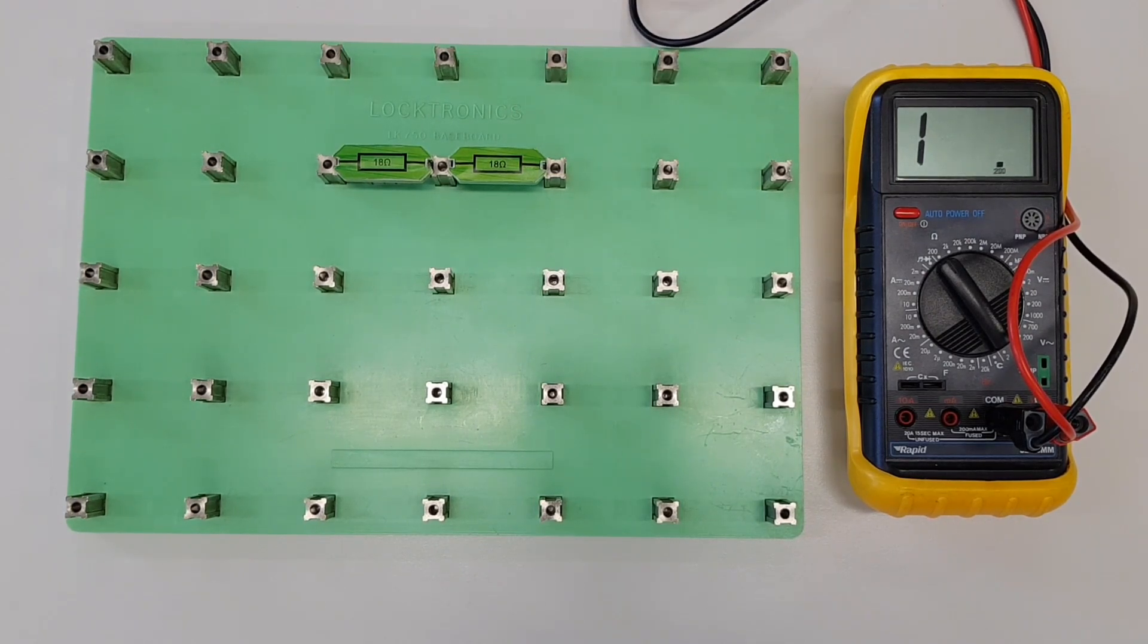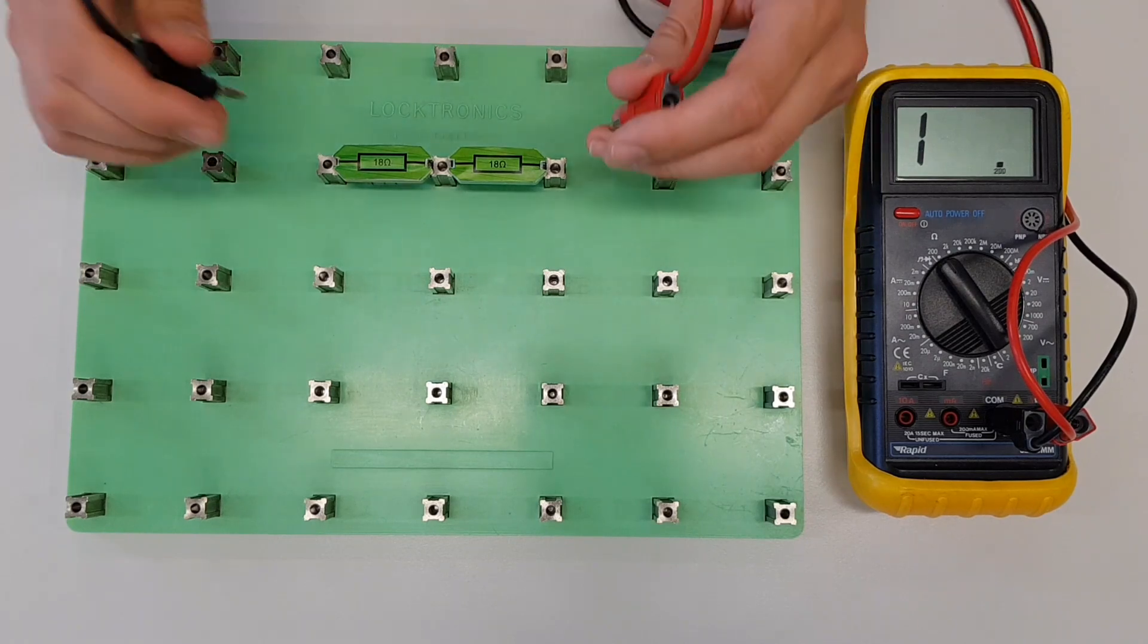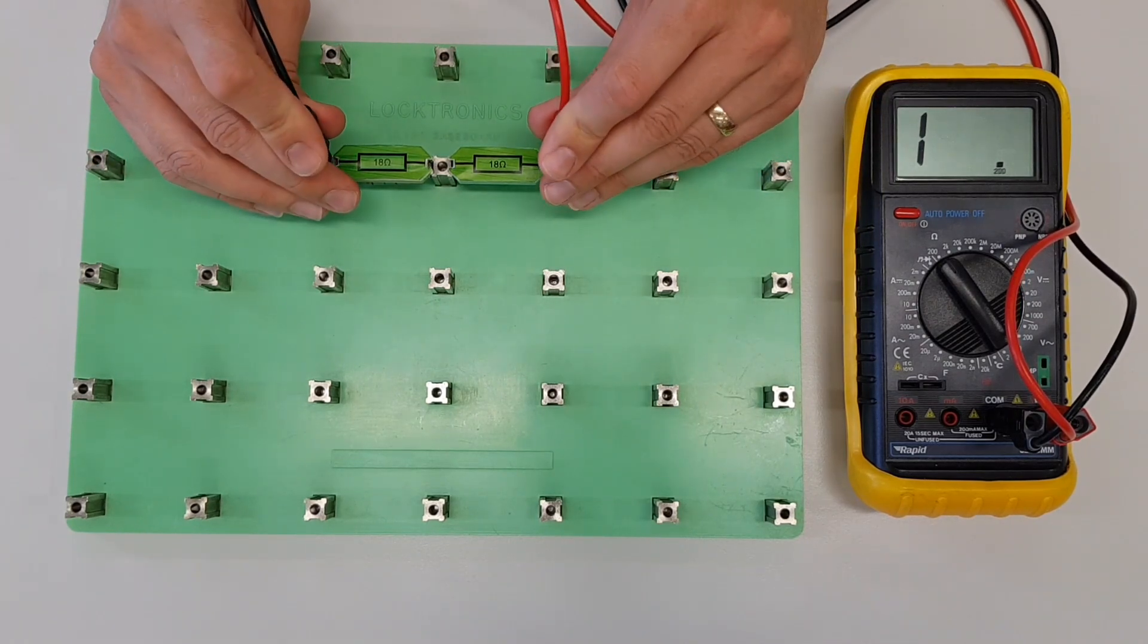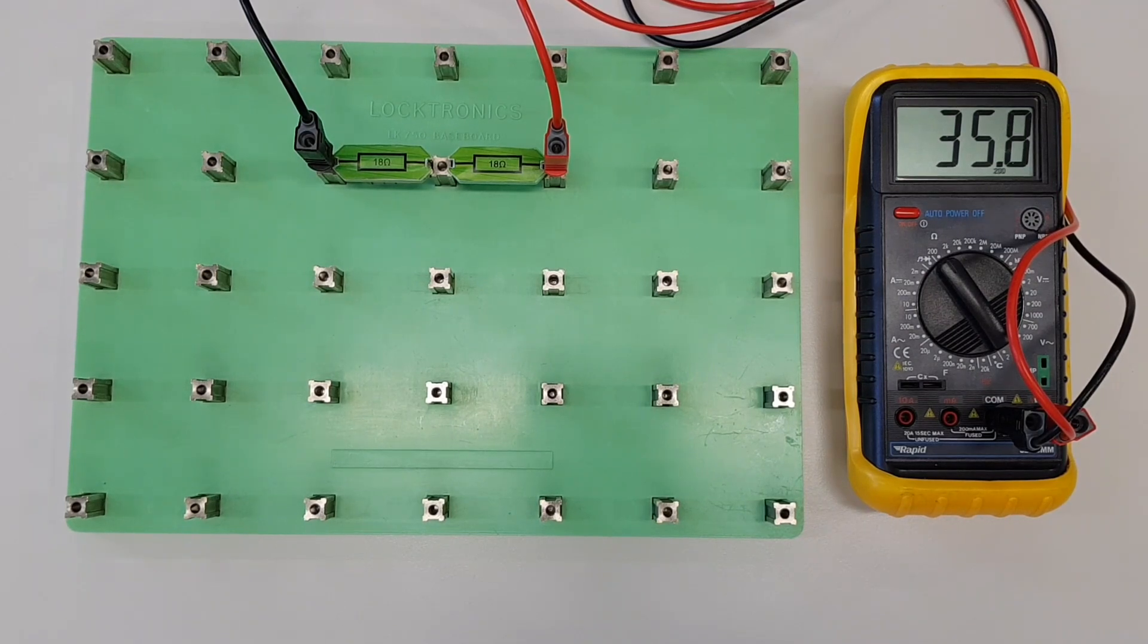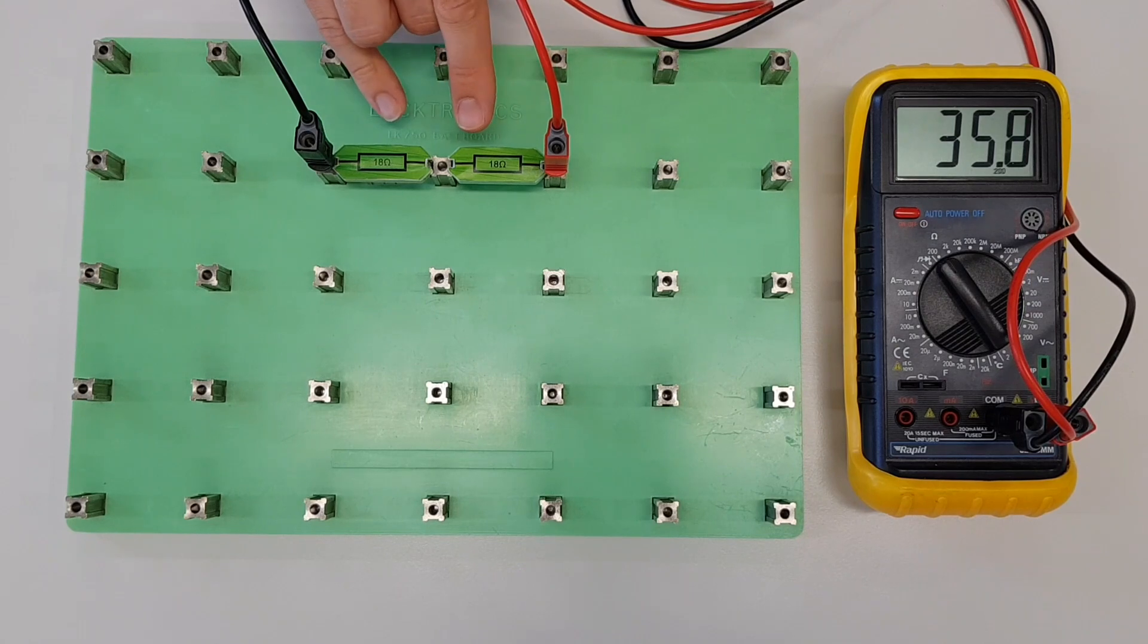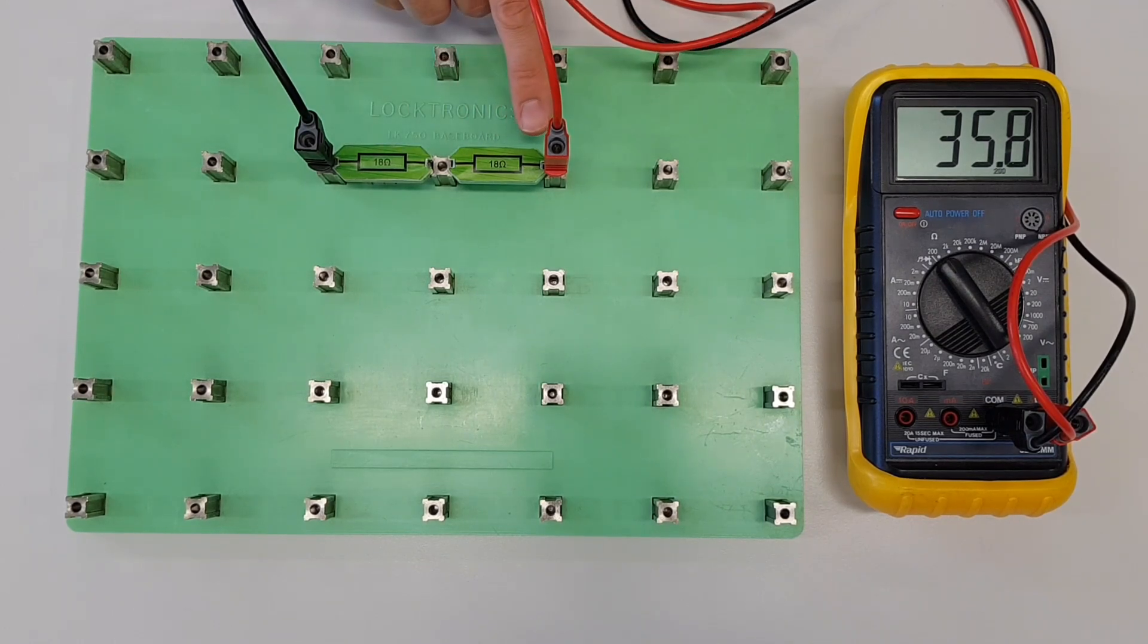What do you think the total resistance of this small series circuit that we've built here would be? Let's plug in our multimeter and see what reading we get. If we measure from one side to the other, we can see there that we're measuring 35.7 ohms. Now, if we just round that up a little bit, we'll see that that's actually 36 ohms. If you look at this logically, you can see that 36 is a result of adding 18 to 18. So 18 plus 18 gives us 36.